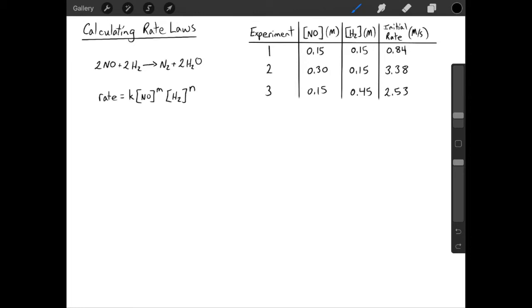The only reactant concentration that's changed has been the nitrogen monoxide. That means the only thing changing the rate of reaction is going to be the change in nitrogen monoxide. By comparing reactions 1 and 2, we can isolate the effect of nitrogen monoxide, which means we can find the value of M.